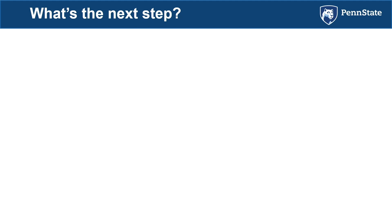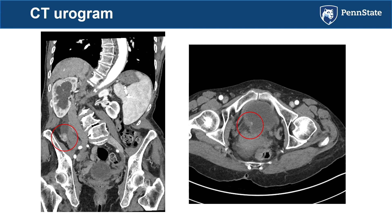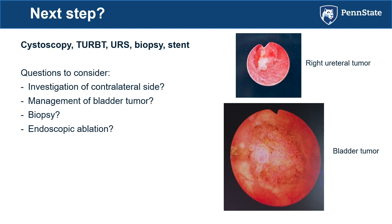I got a CT urogram for this lady. On the contrast-enhanced phase, there is an enhancing mid-ureteral mass as well as a mass in her bladder — she is one of the 17% who present with concurrent bladder and upper tract cancer. You can also appreciate her severe scoliosis; her aorta is not pointing where it should be. I counseled her about cystoscopy, bringing her to the operating room for TURBT, ureteroscopy, partial biopsy, and stent placement. I found a papillary and sessile bladder tumor, as well as an obstructing mid-ureteral tumor.